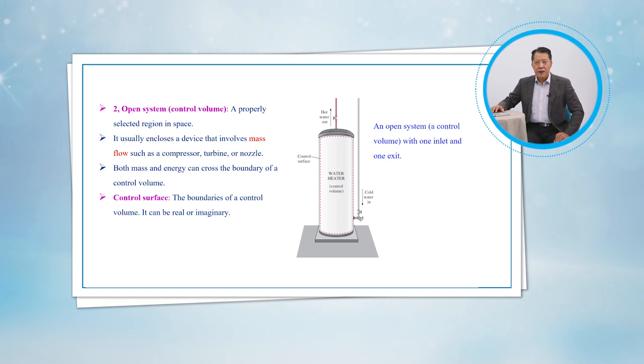The boundaries of a control volume are called a control surface, and they can be real or imaginary. In the case of a nozzle, the inner surface of the nozzle forms the real part of the boundary, and the entrance and exit areas form the imaginary part since there are no physical surfaces there.